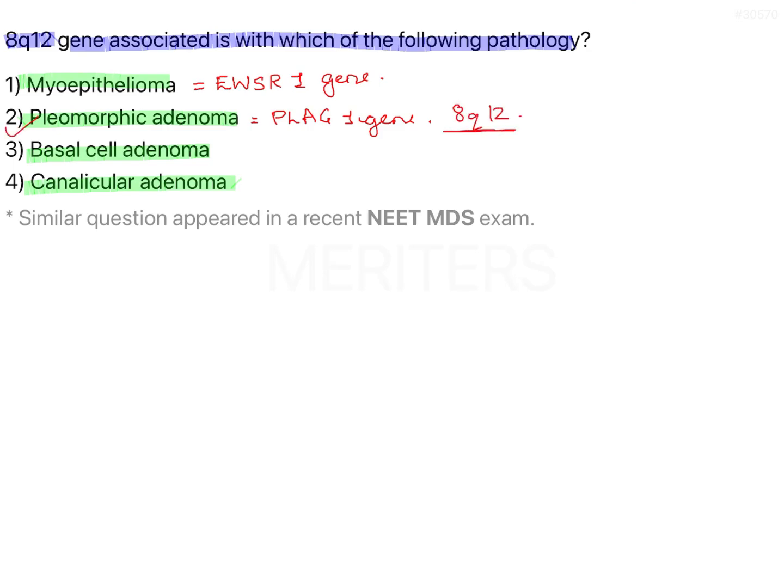So pleomorphic adenoma is the correct answer. Basal cell adenoma and canalicular adenoma are also salivary gland neoplasms, but their exact etiology is not mapped to a specific genetic condition.